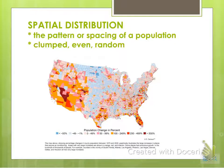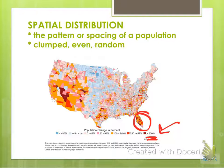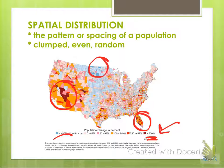There's also something called spatial distribution, which is the pattern or spacing of a population. Looking at this map, the key shows that the highest populated areas are the darker red color — you see some spots in Florida and in the west. Those represent the highest percent change. Blue areas, like up in the Dakotas and much of the Midwest, show the lowest percent change.